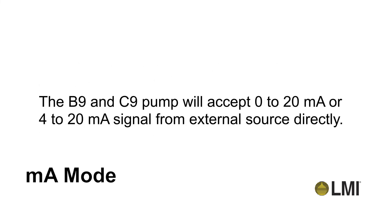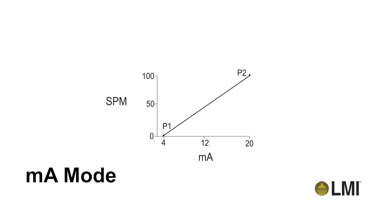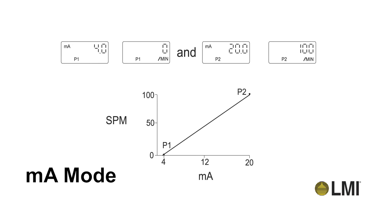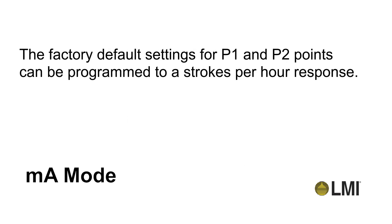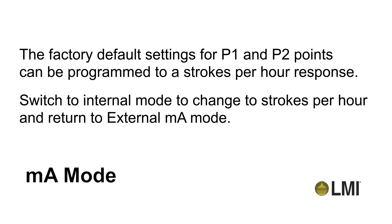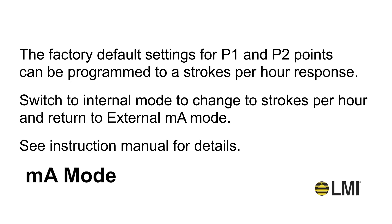The B9 and C9 pump will accept 0 to 20 milliamp or 4 to 20 milliamp signals from an external source directly. The pump's speed is determined by the program response curve P1 and P2. Factory default values are P1 equals 4 milliamps at 0 strokes per minute, and P2 equals 20 milliamps at 100 strokes per minute. The factory default settings for P1 and P2 points can be programmed to a strokes per hour response. Switch to internal mode to change to strokes per hour and return to external milliamps mode. See the instruction manual for details.